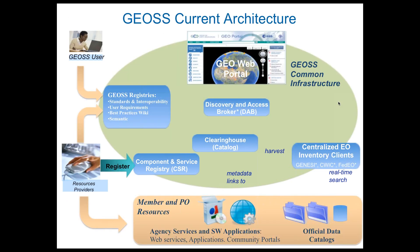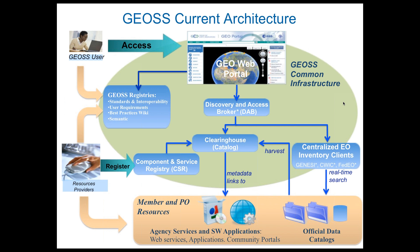Looking at the current architecture: the GEOS user at the top accesses the GeoWeb portal, which is the public face and front end. From a publisher's point of view — many folks on this call would be interested in registering as well as accessing resources — they would use the component and service registry to register items. That currently goes into the clearinghouse, which is accessed by the discovery and access broker and points back to the metadata that points to the actual catalogs at a distance. Inside the metadata, you have links to your software, web services, applications, community portals, and datasets. Behind this, from an API point of view, there are also access points.